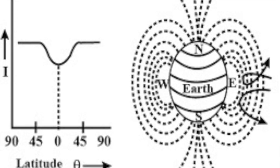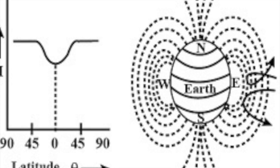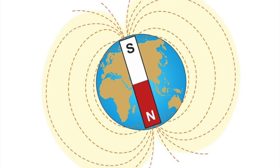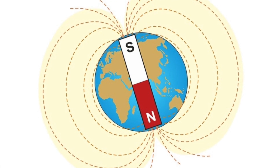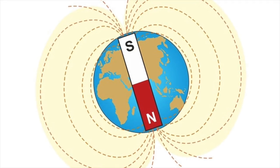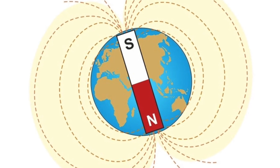Cosmic rays are charged particles which are affected by Earth's magnetic field. Thus, the charged particles have minimum deflection at the poles and maximum deflection at the equator.